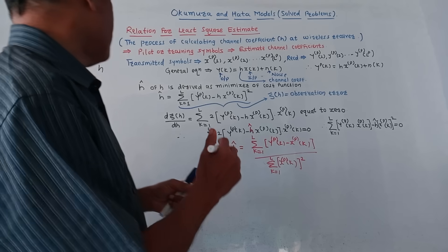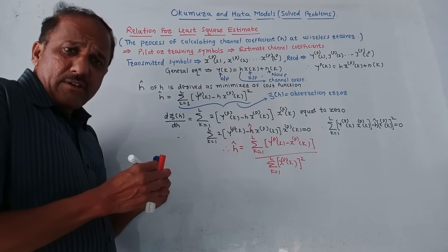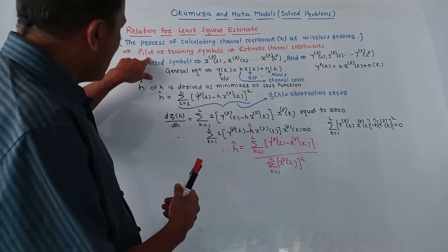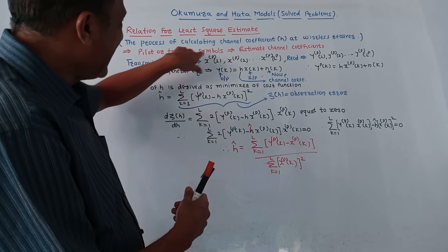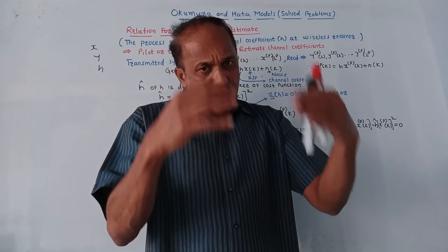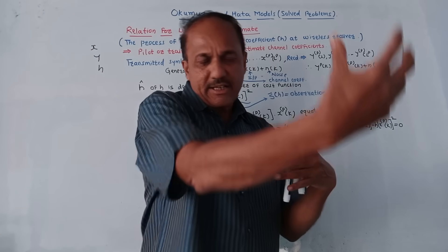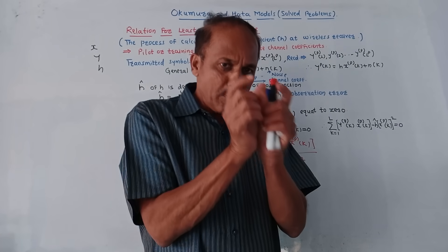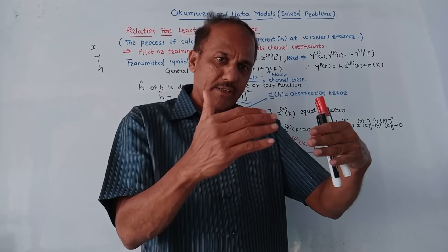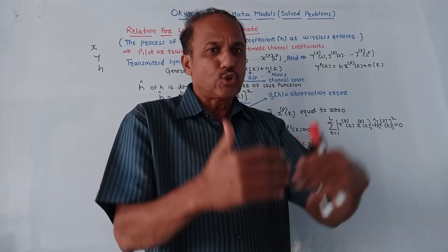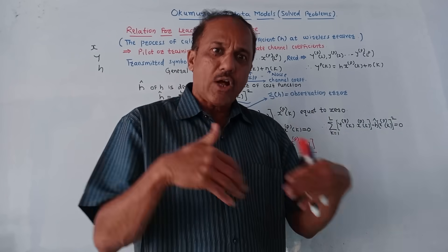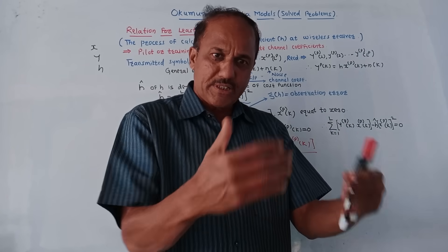We have to calculate the estimation of channel coefficients. Channel estimation means the process of calculating channel coefficients — that means the value of H — at the wireless receiver, which in the case of mobile communication is a wireless system. To obtain the estimation, we need to make use of pilot or training symbols — a known symbol sent to the receiver. The receiver already knows these symbols, so it gets trained on how to estimate the channel coefficient.